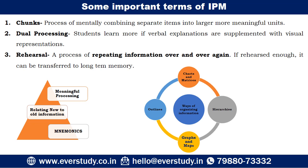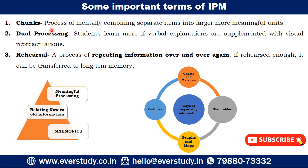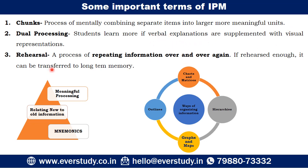Some important points about the Information Processing Model: First is chunks — dividing large information into smaller parts. Second is dual processing — if there is only verbal input without visual, learning is weaker, but a combination of verbal and visual makes it more comfortable to remember. Third is rehearsal — repeatedly repeating or rehearsing information will help transfer it to long-term memory more easily.